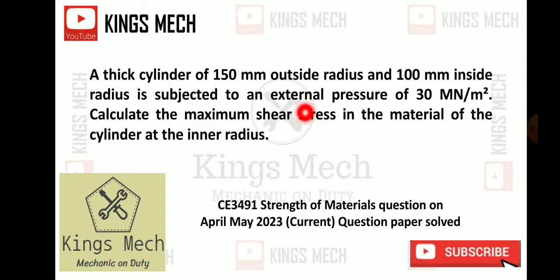This problem based on thick cylinder. A thick cylinder 150 mm outside radius and 100 mm inside radius is subjected to external pressure 30 mega newton per meter square. Calculate the maximum shear stress in the material of the cylinder at the inner radius. This is the question.